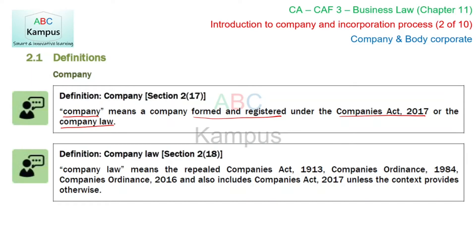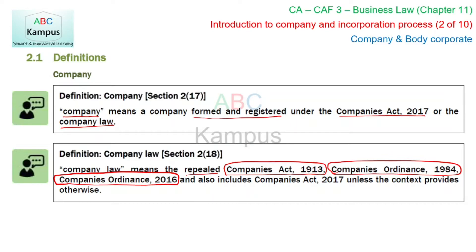Company law means the repealed — یعنی پرانے laws جو اب ختم ہو چکے ہیں — Companies Act 1913، Companies Ordinance 1984، Companies Ordinance 2016 (جو بڑے brief time کے لیے بنا تھا اور پھر ختم ہو گیا)، and also includes Companies Act 2017، جو ہمارا latest law ہے۔ Unless the context provides otherwise، تو company law کا مطلب یہ سارے acts ہیں۔ اپنے business کے نام میں لکھ لینے سے وہ company نہیں بنتی — it must be formed and registered under the company law.